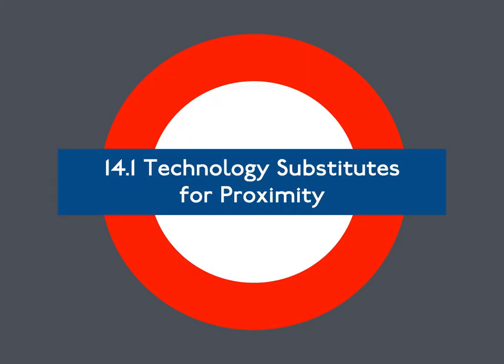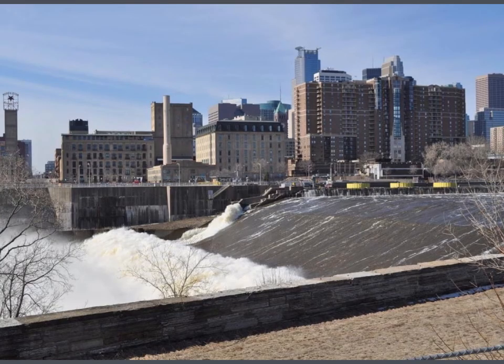14.1: Technology Substitutes for Proximity. In the dark age before electricity, great if not satanic mills were located adjacent to waterfalls to provide direct energy. This is the origin story of many early Industrial Revolution cities. The development of the electric grid, first DC then AC, untethered milling from the falls. In the age before the streetcar, people lived within walking distance of their jobs. Downtown was very important.